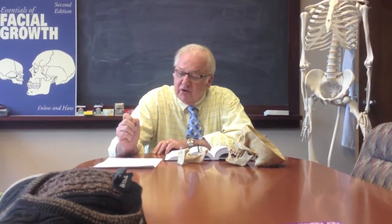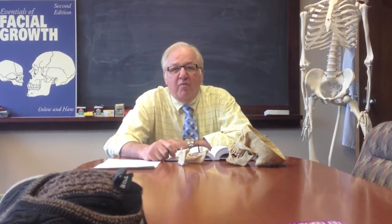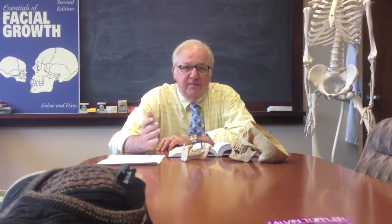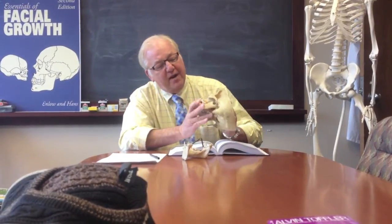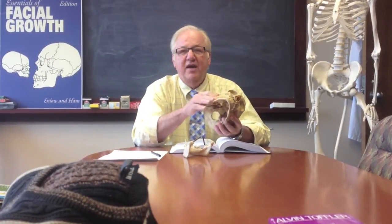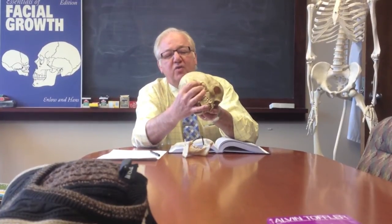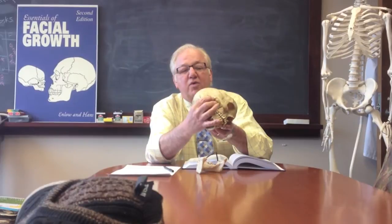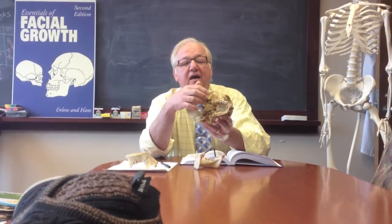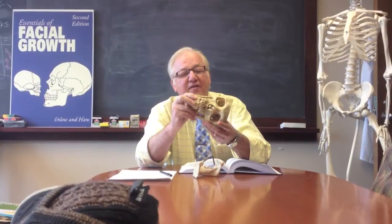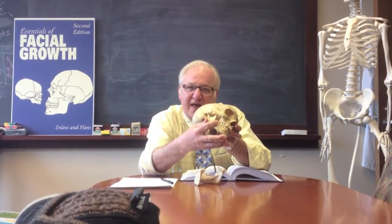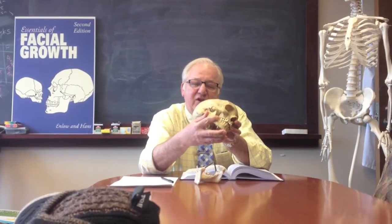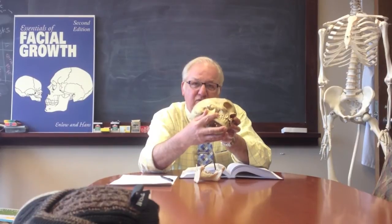Why do adults have more problems with their TMJ than children? If we look at the temporomandibular joint — there are two, one on the left and one on the right — the anatomic structure in the adult shows that the glenoid fossa is much deeper, and the way the condyle fits within the glenoid fossa is much tighter. It's much easier to damage your joint when there's a lot of constraint of movement. That is the number one reason why adults have more problems with their temporomandibular joint than children.